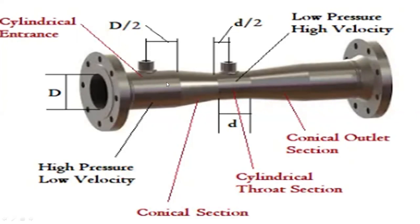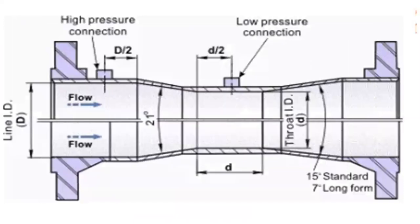In the convergent conical section, the venturimeter tube diameter gradually decreases. The conical angle is normally 21 degrees plus or minus two degrees. While the liquid flows inside the venturimeter, the velocity of fluid increases at the expense of a decrease in pressure. Then in the cylindrical throat, the diameter d consists of the minimum venturimeter diameter. In the throat section, the velocity is maximum and the pressure is minimum. Normally, the throat diameter is one-third or one-fourth of the inlet pipe diameter.